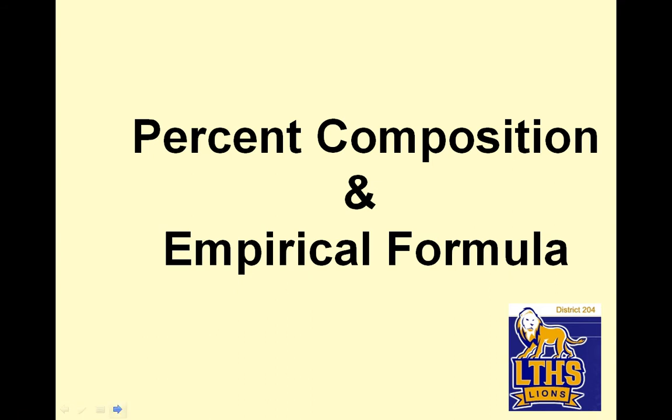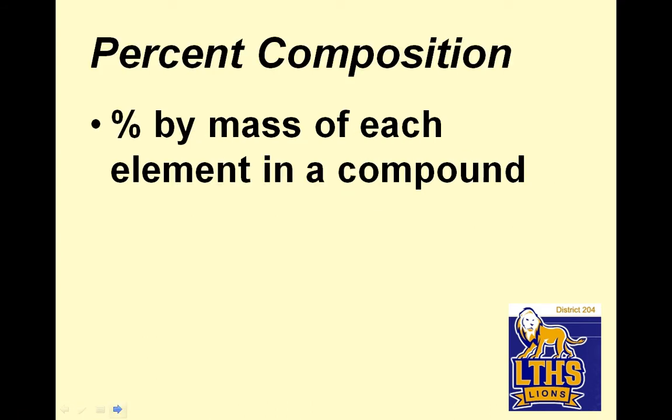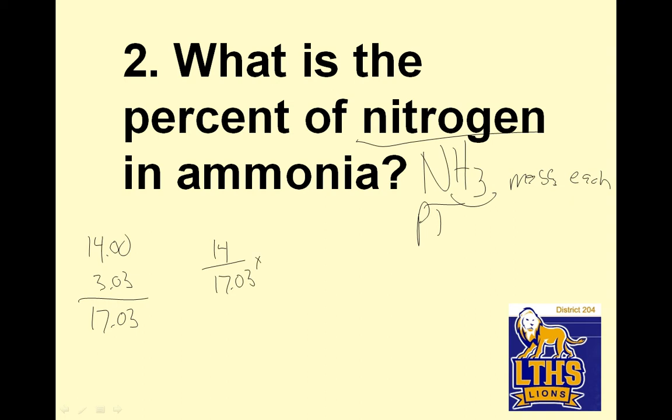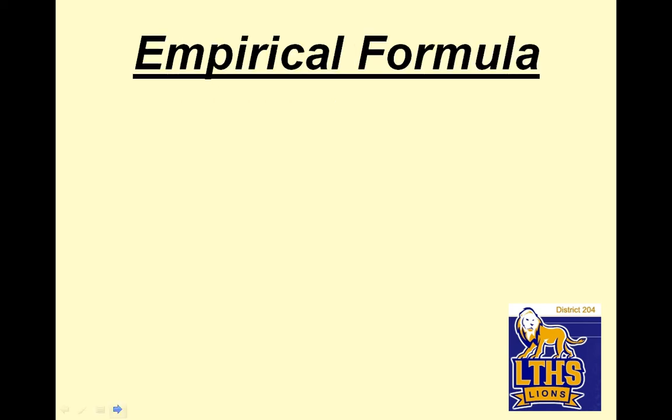Percent composition, empirical formula. Percent composition is percent by mass of each element in a compound. This is actually quite easy with the percent of nitrogen in ammonia. Ammonia is NH3. So what I need to do is find the masses of each. Nitrogen is 14.00, three hydrogens are 3.03, my total is 17.03. Percent nitrogen—so percent is always part over total: 14 over 17.03 times 100%. And 14 divided by 17.03 is 82.2%. Just like what you do to find your grades.